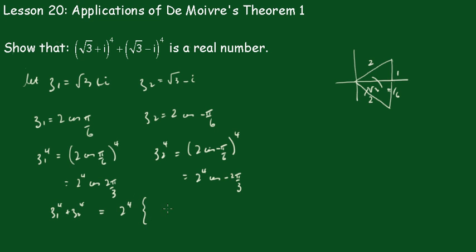I also add those two together... minus i·sin(2π/3). These guys go out.